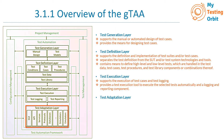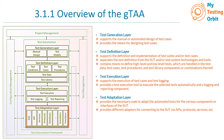The fourth layer is the test adaptation layer. It provides the necessary code to adapt the automated test for the various components or interfaces of the system under test, and provides different adapters for connecting to the SUT via APIs, protocols, and services. This is essentially the interface layer — it can be API, GUI, or services — connecting to the component, application, or system under test. This is where the functionality required to interface with the technology implementations we need to test is implemented.